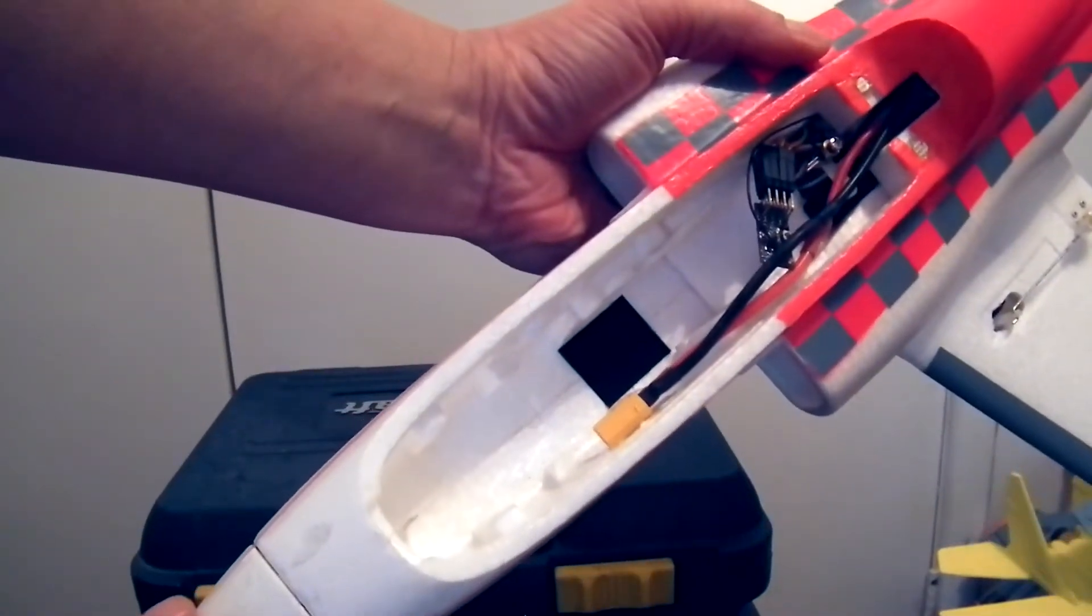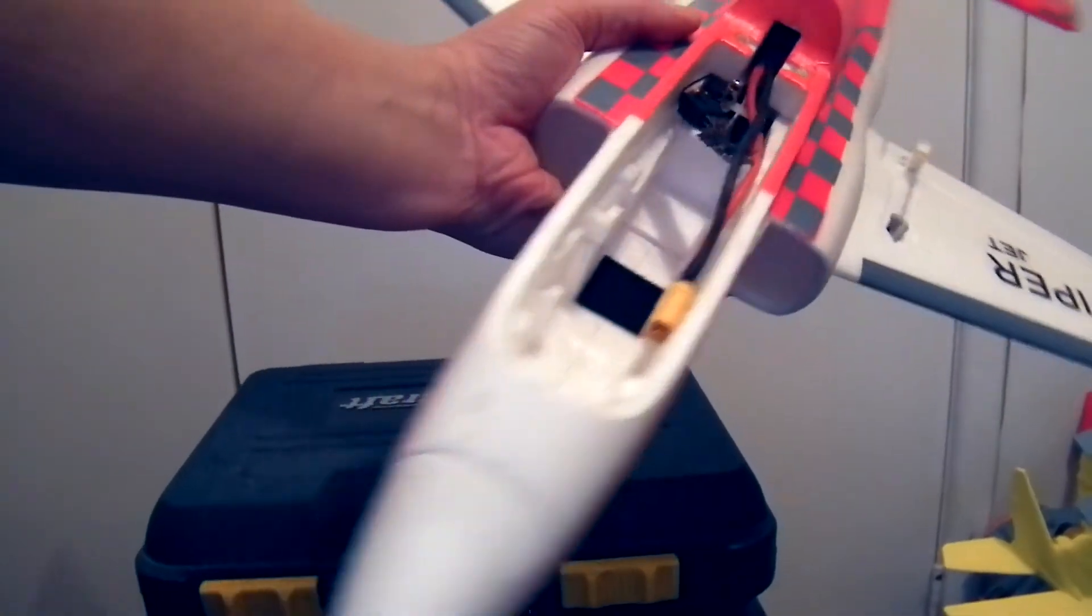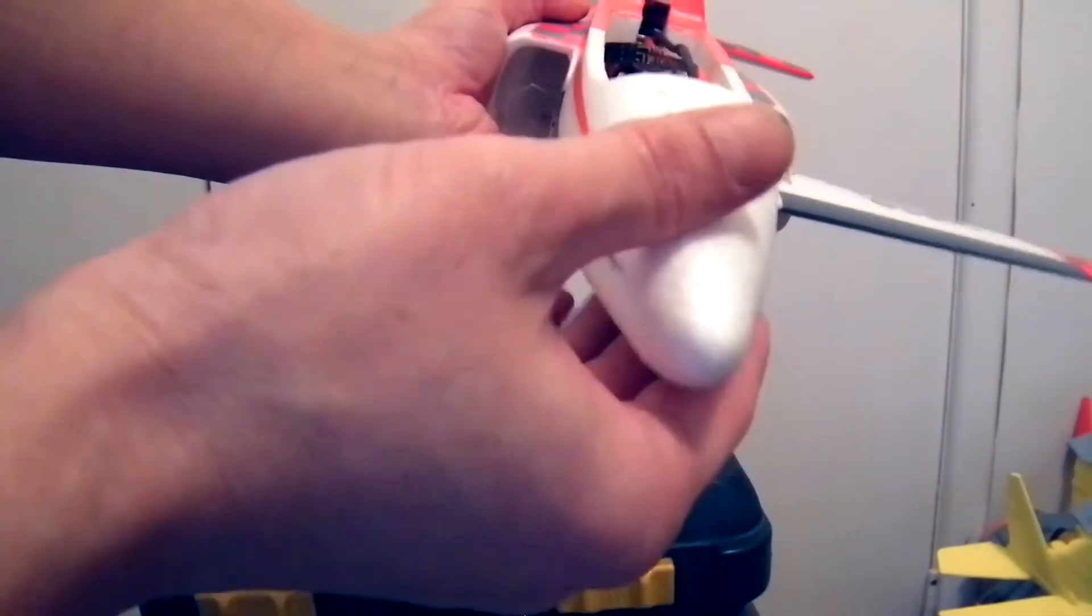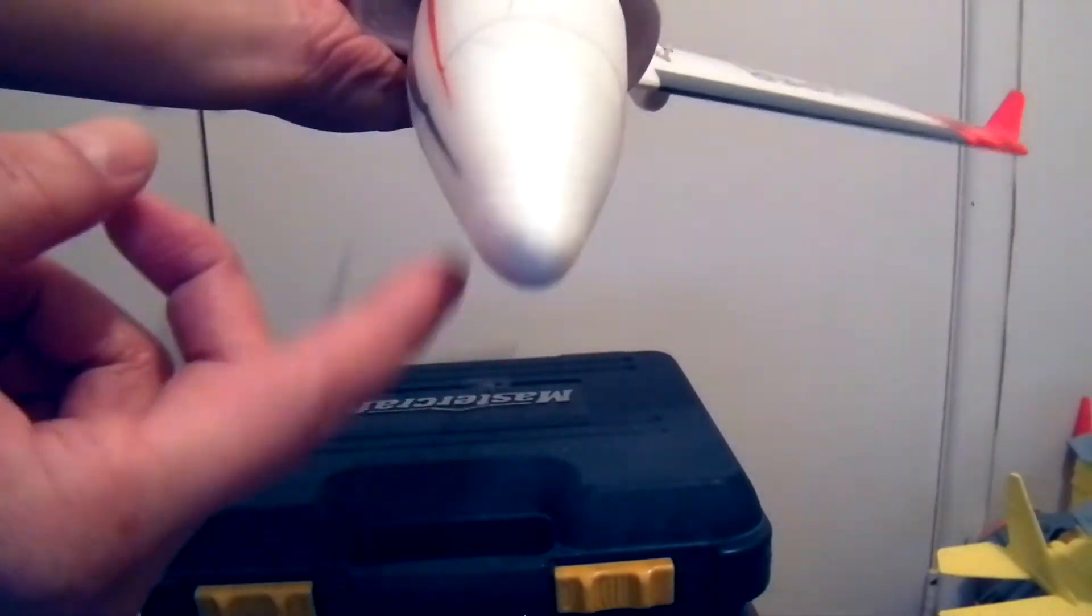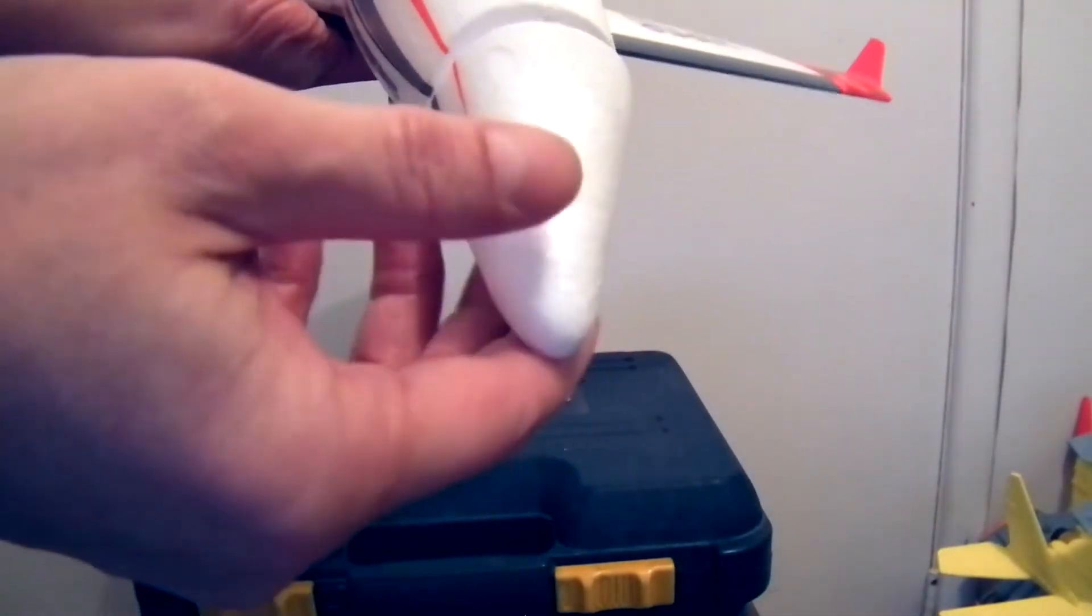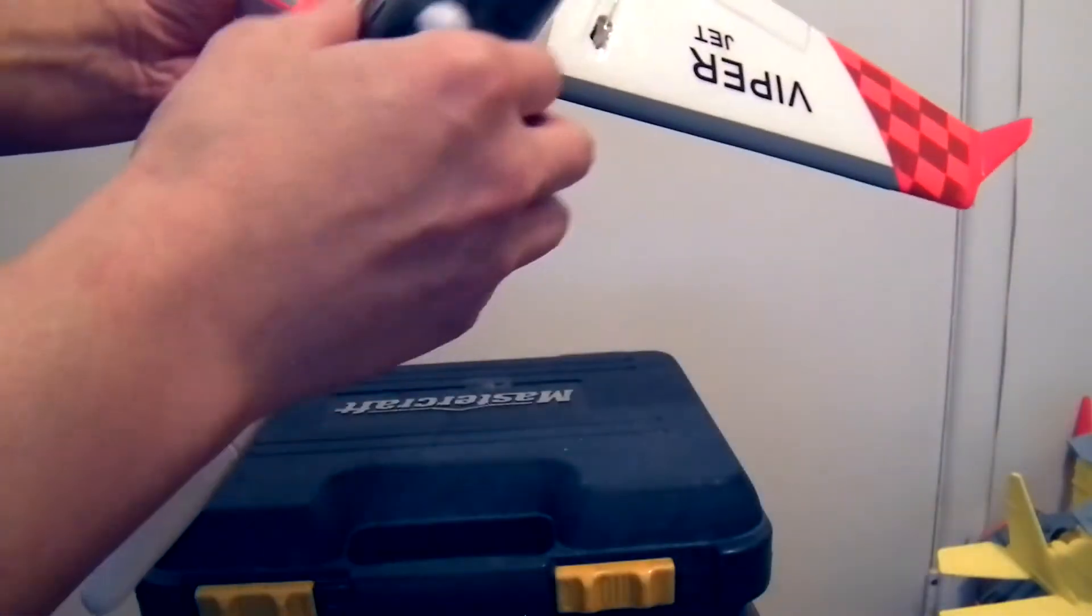This is the battery bay in the canopy. It's got a removable nose for off landings. And it's a 50 millimeter EDF jet.